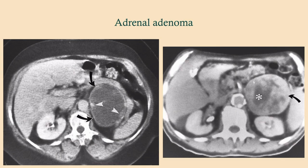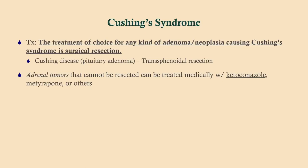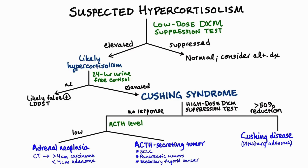These are pictures of adrenal adenomas — you can see they are just superior to the kidneys. On a coronal view, the adrenal adenoma sits clearly just superior to the upper pole of the kidney. The treatment of choice for any adenoma or neoplasia causing Cushing syndrome is surgical resection. For a pituitary adenoma — Cushing's disease — the best approach is transsphenoidal resection. Adrenal tumors that cannot be resected are treated medically with drugs that reduce cortisol synthesis, such as ketoconazole, metyrapone, or mifepristone.